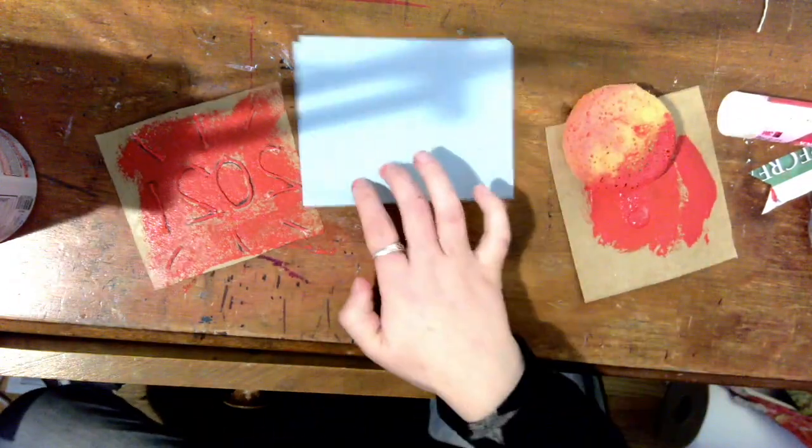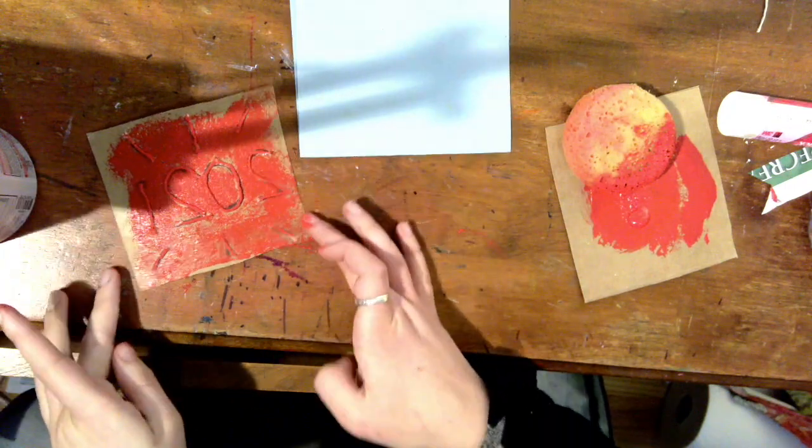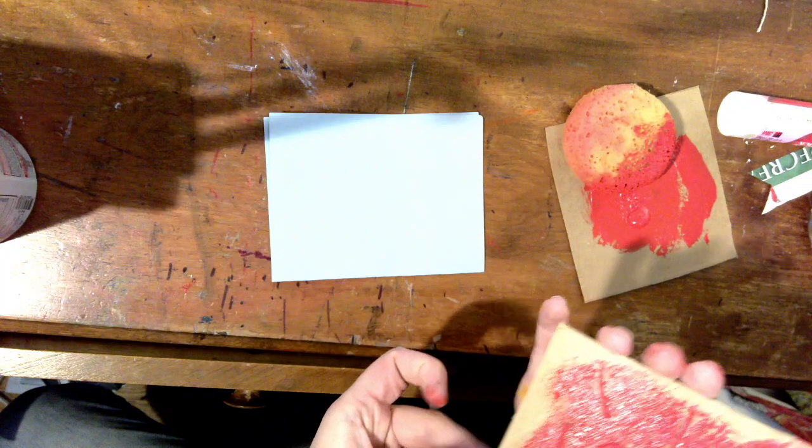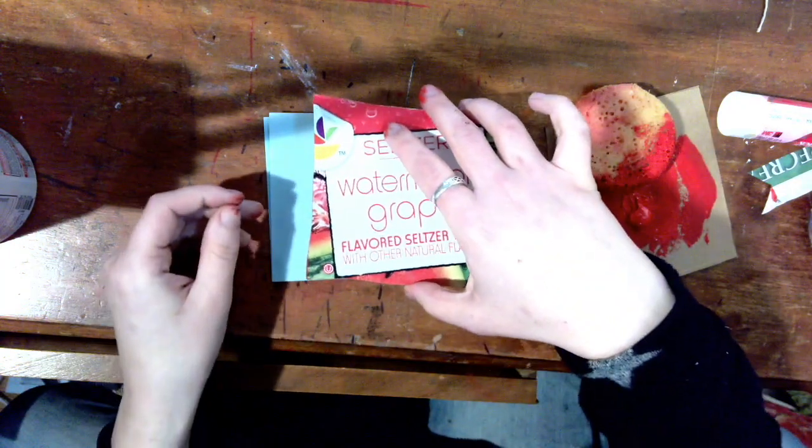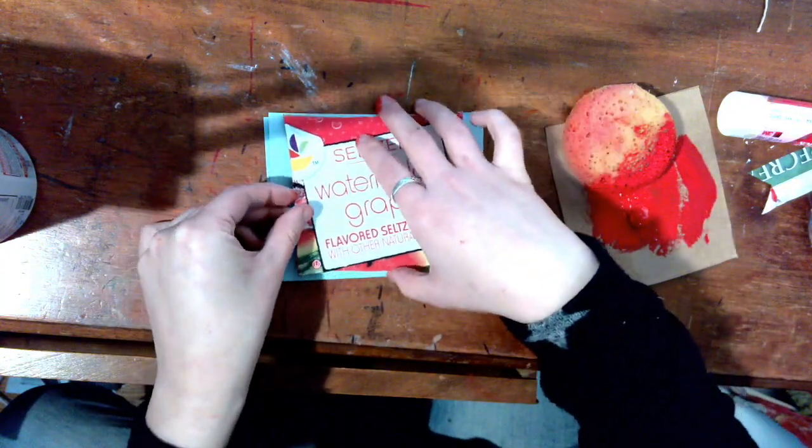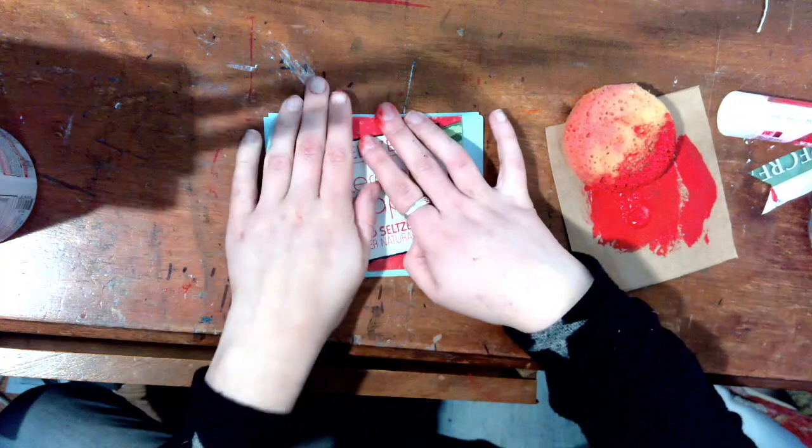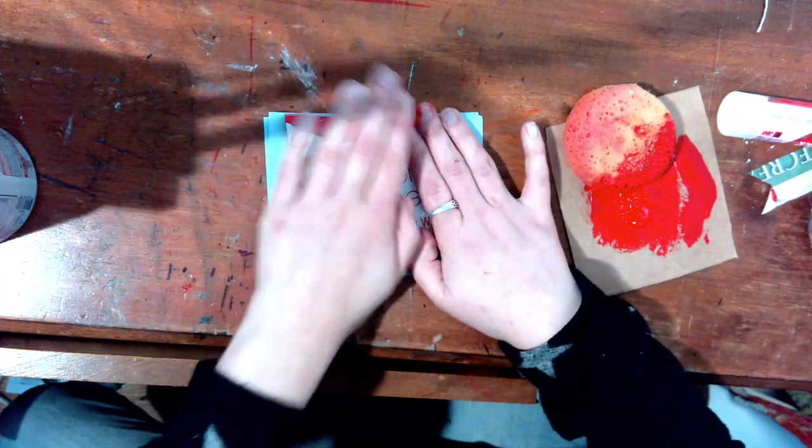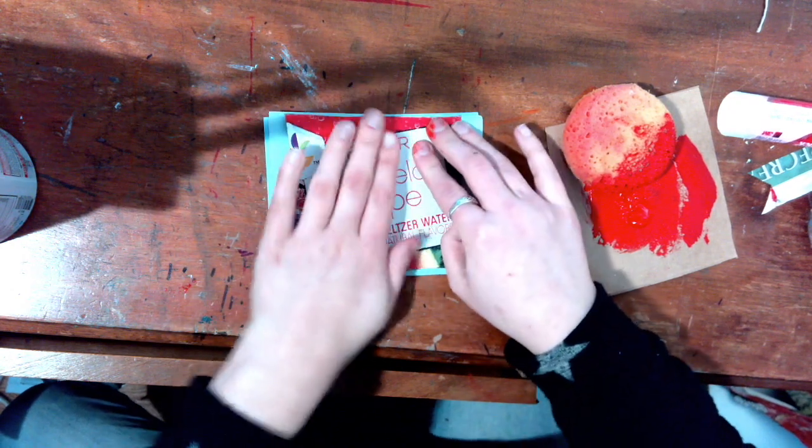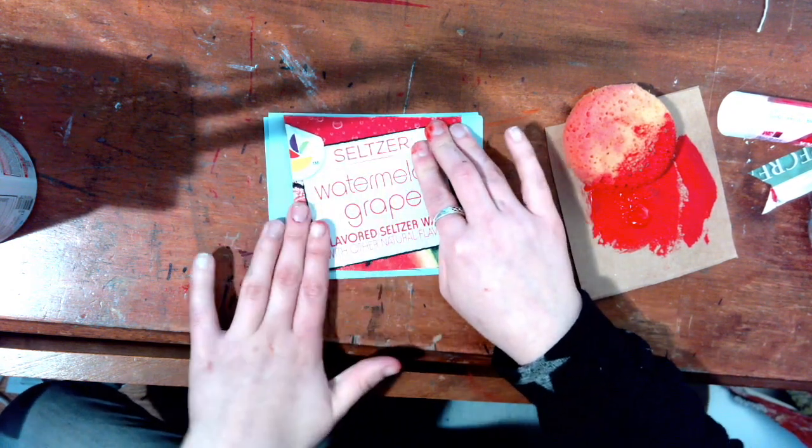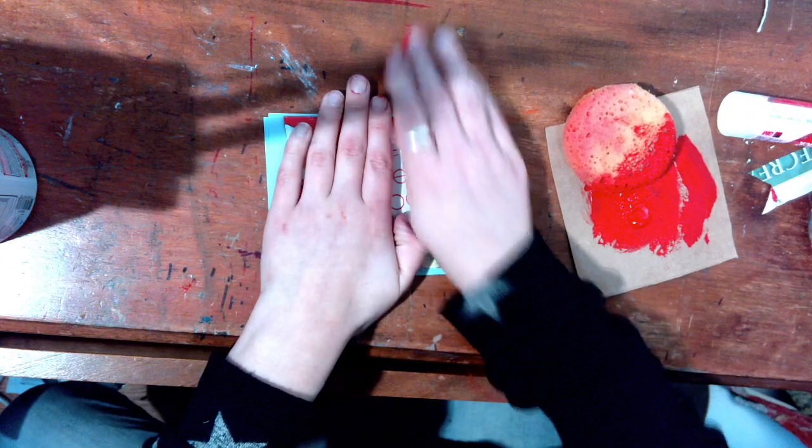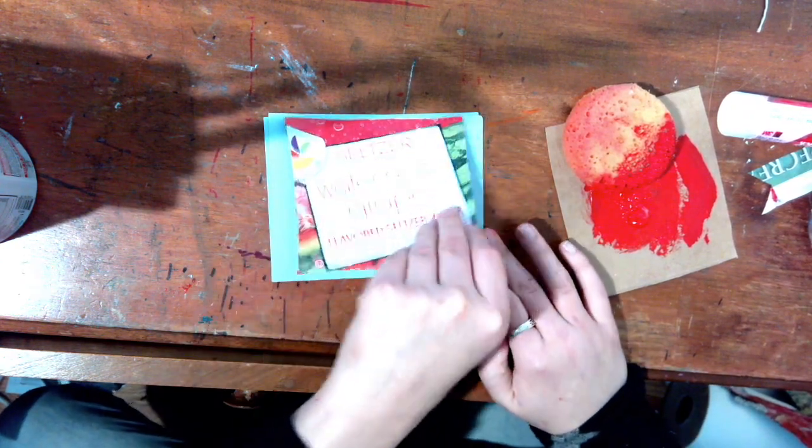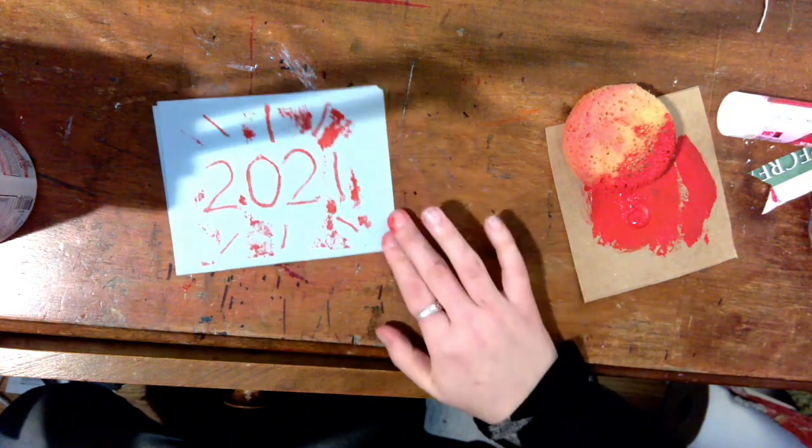After that, I'm going to lay my sponge down and be very careful picking this up and laying it flat on my other piece of paper. Pressing it down evenly. We'll see how it comes out pretty soon. Giving it a good press. And there it is.